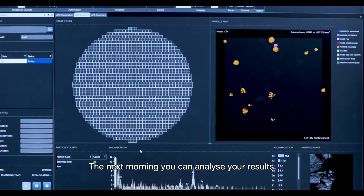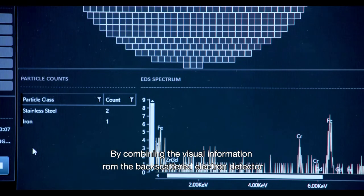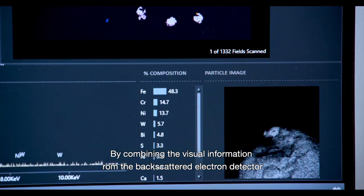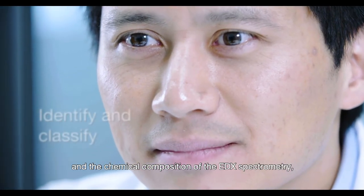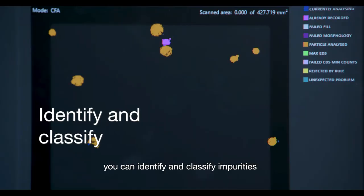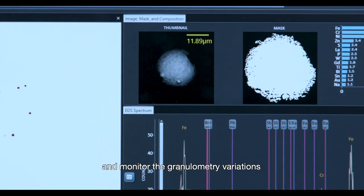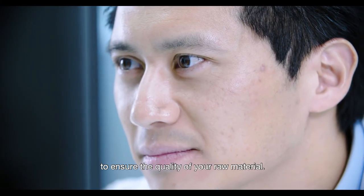The next morning, you can analyze your results. By combining the visual information from the backscattered electron detector and the chemical composition from EDX spectrometry, you can identify and classify impurities and monitor granulometry variations to ensure the quality of your raw material.